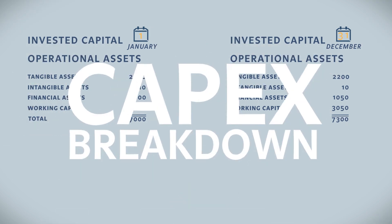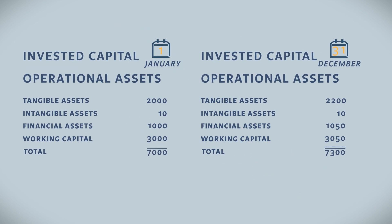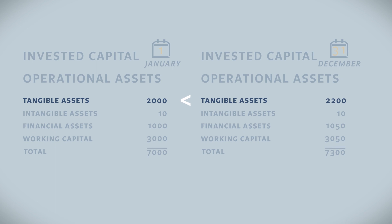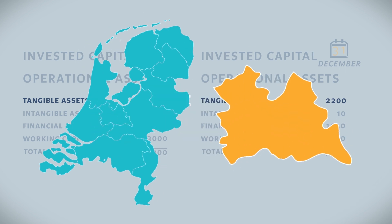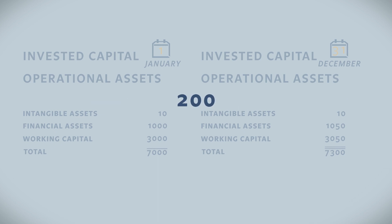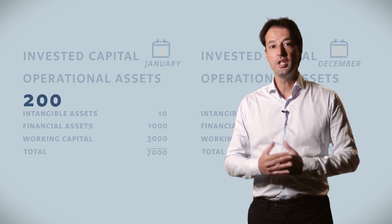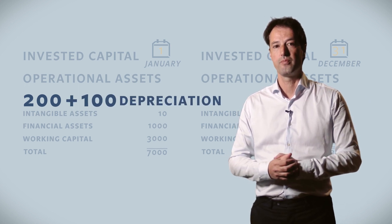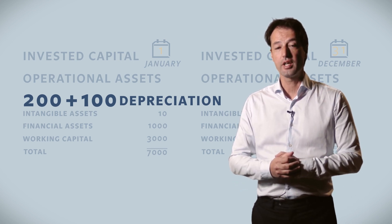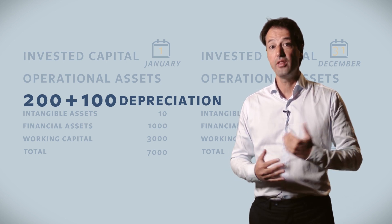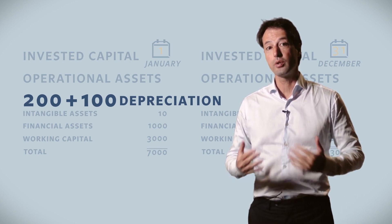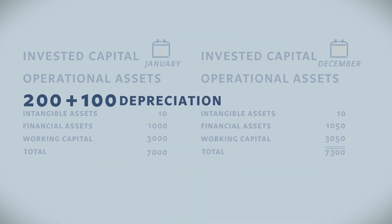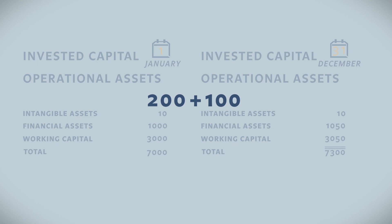Now it's time to break down the CAPEX, starting with investments in tangible fixed assets. We can see that our tangibles have increased from 2000 to 2200. This difference is the result of a piece of land that we purchased for 200. In order to get to the total investments in tangibles, we need to correct this amount for the depreciation of 100. Depreciation is not an expense, but a reduction of the value of assets over time. Therefore, we actually invested 100 more than the difference in tangibles shows us. In sum, we've invested 200 in a piece of land plus 100 correction for depreciation, giving us a total of 300 going to CAPEX.